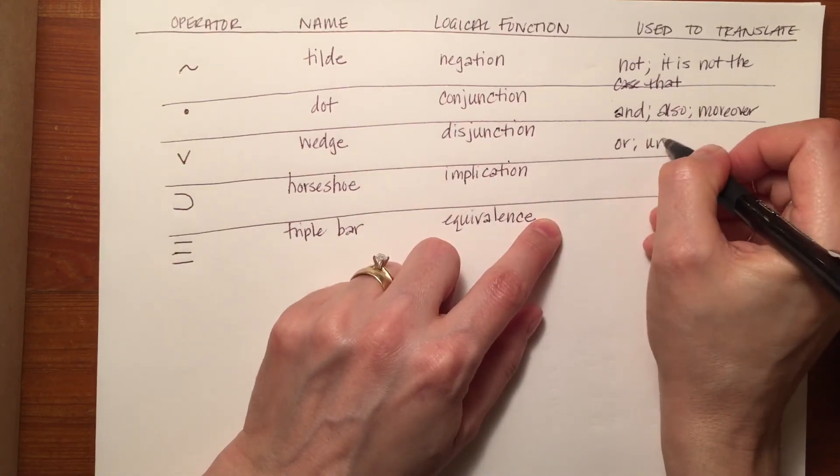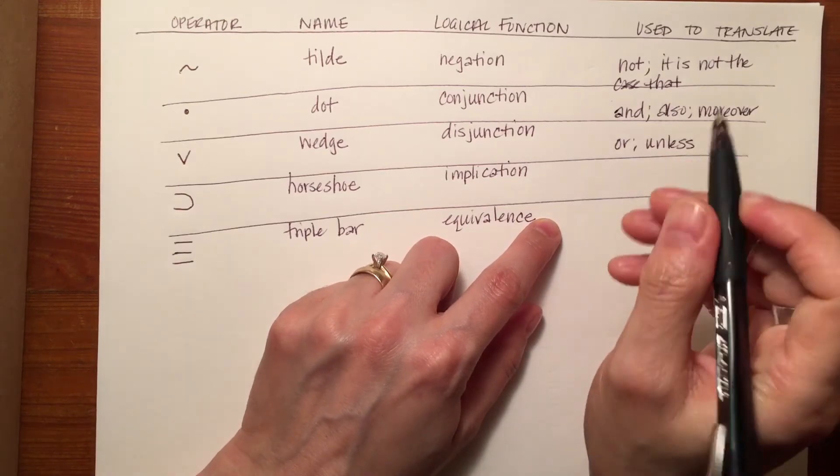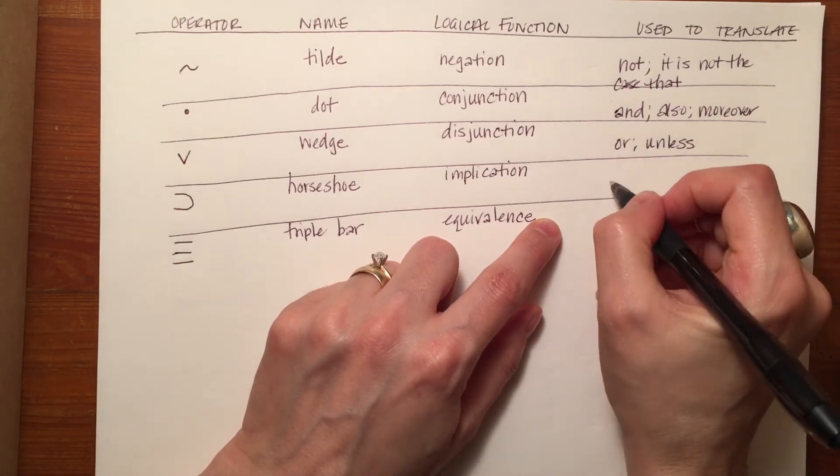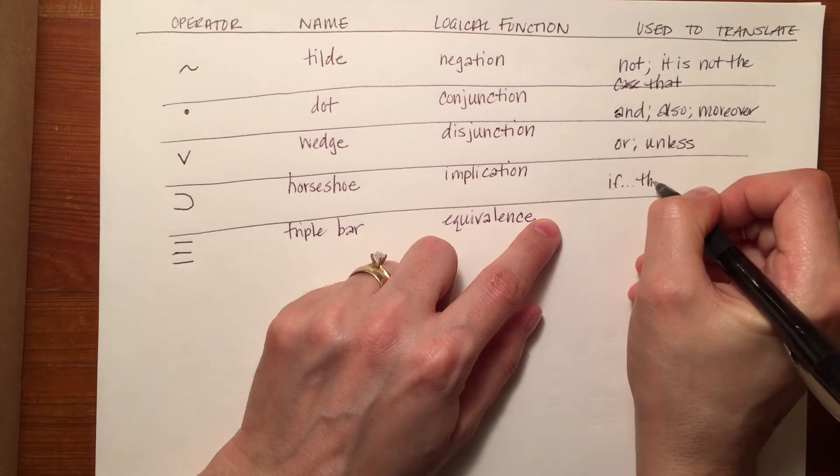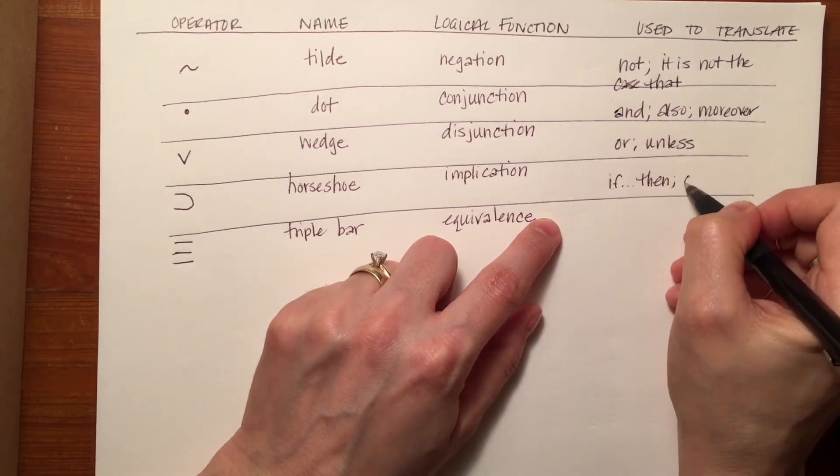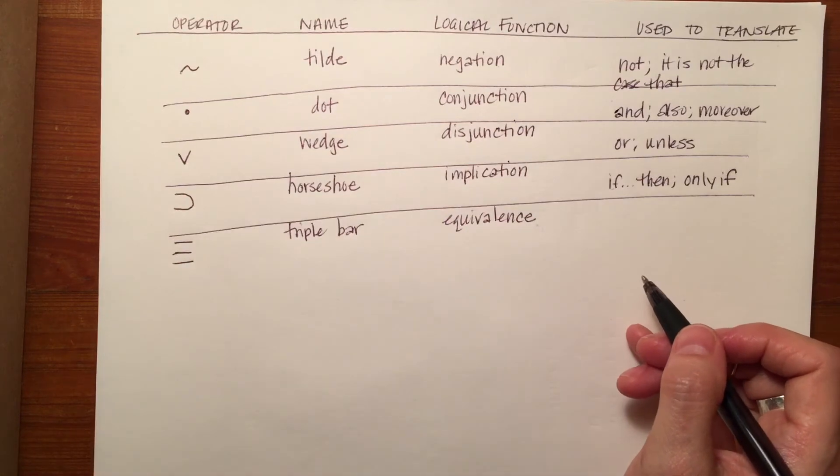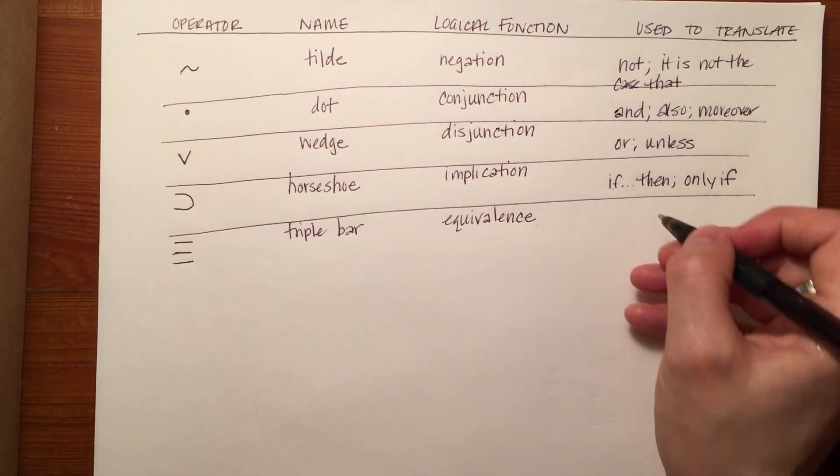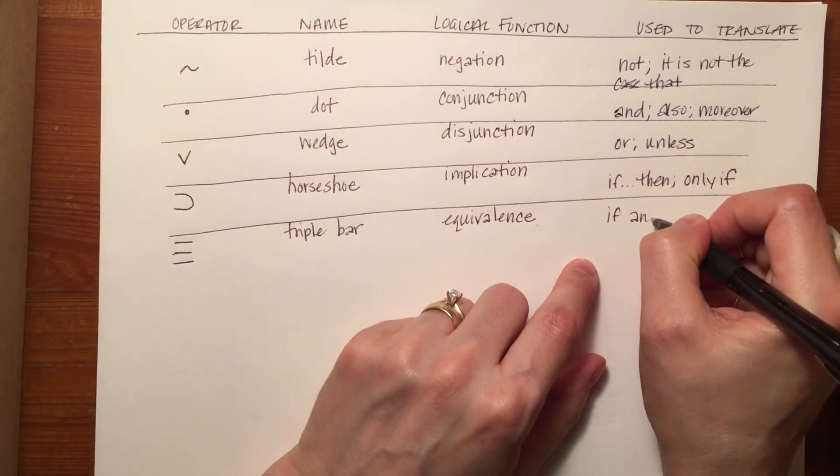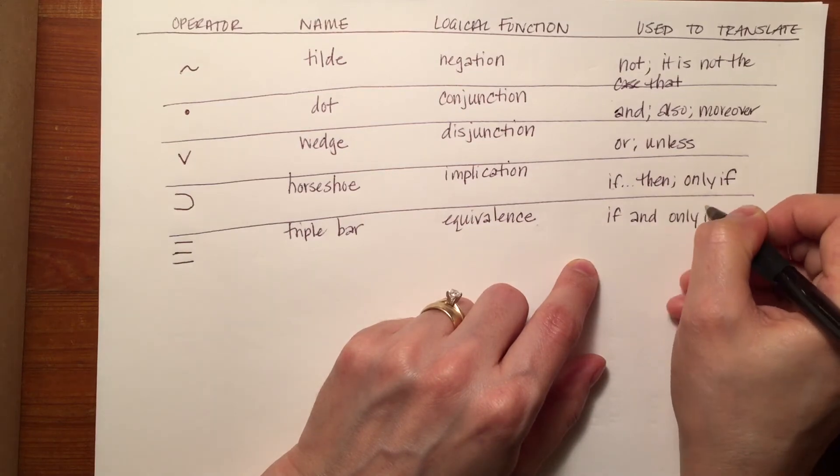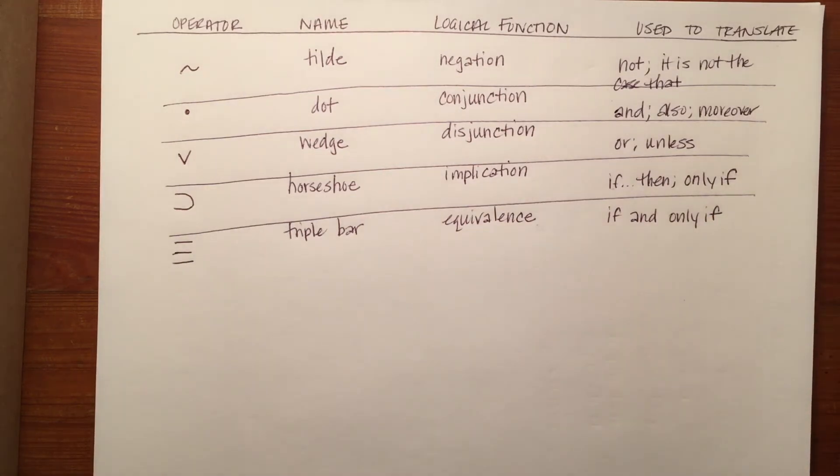The dot in conjunction translates 'and,' the word 'also,' or 'moreover.' The wedge translates the word 'or' or 'unless.' The horseshoe translates 'if then,' that phrase, and also the phrase 'only if.' And the triple bar translates the phrase 'if and only if.'